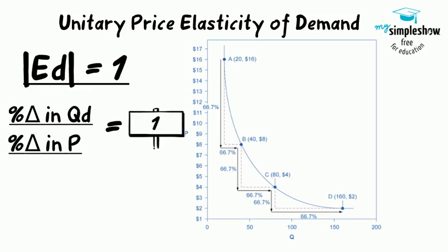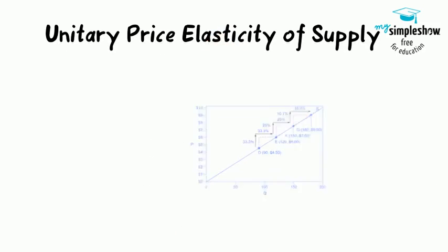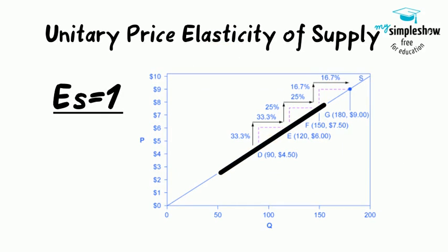A demand curve with constant unitary elasticity will be a curved line. Unlike the demand curve with unitary elasticity, the supply curve with unitary elasticity is represented by a straight line, and that line goes through the origin. A constant unitary elasticity supply curve is a straight line reaching up from the origin.